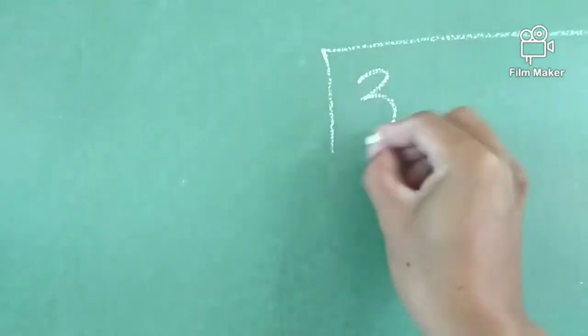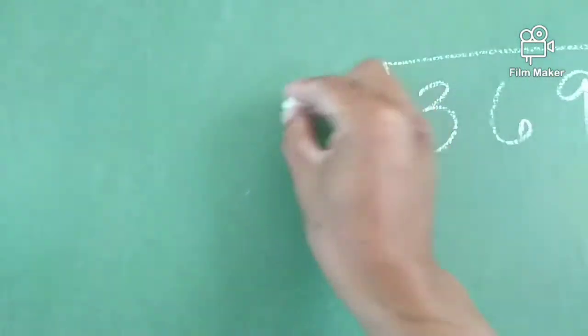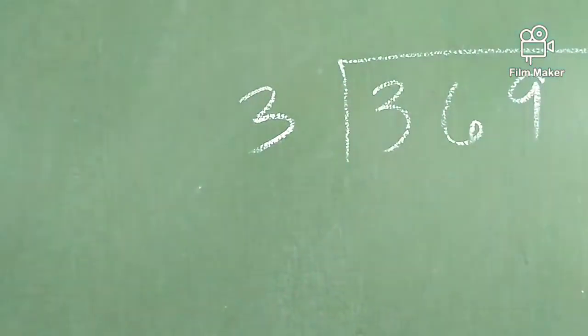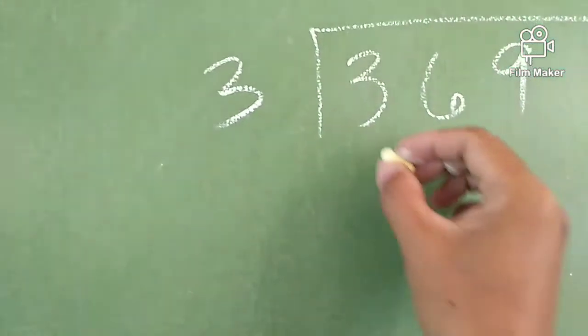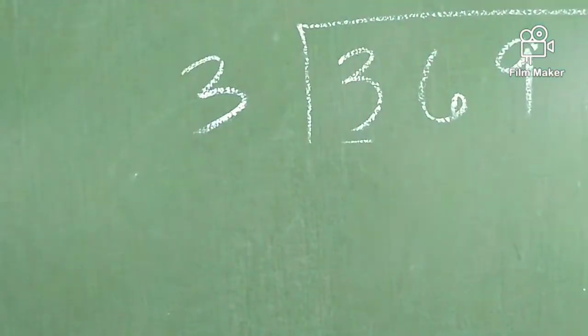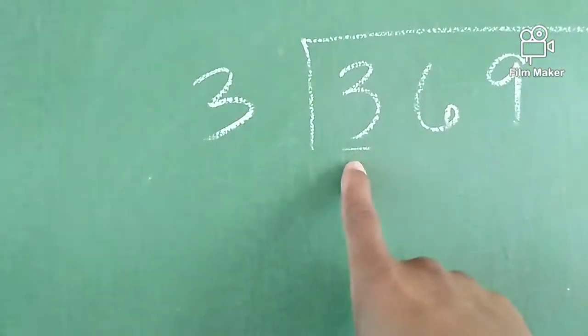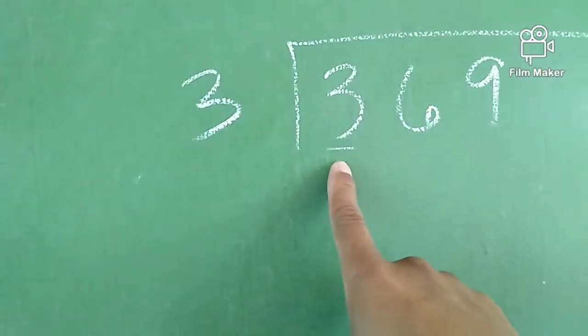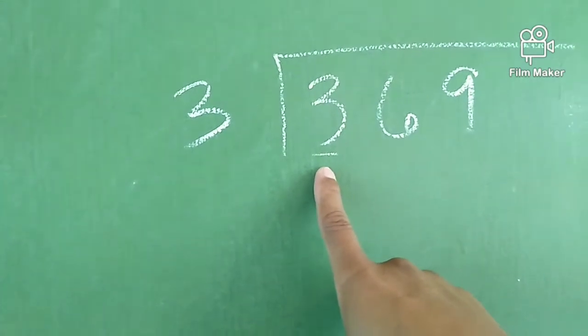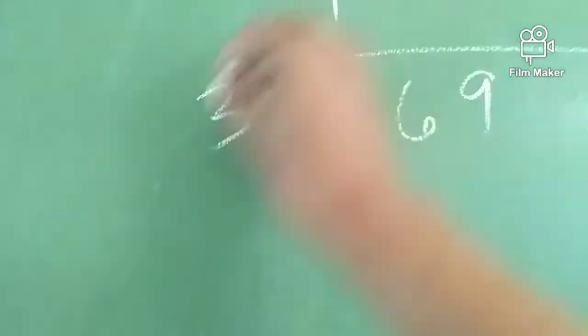Given this kind of division: 369 divided by 3. First thing to consider is yung unang number — hindi yung ones ha, kundi yung pinakaunang number to the left. I-divide mo siya. 3 divided by 3 is 1.